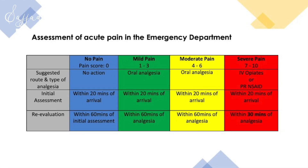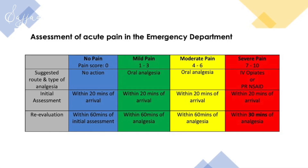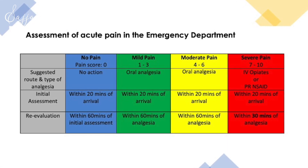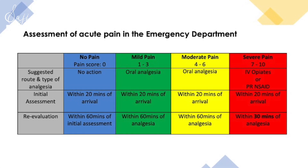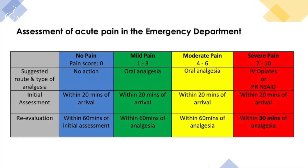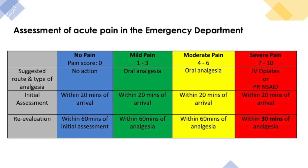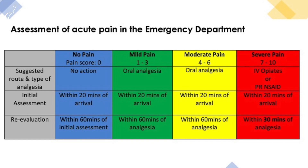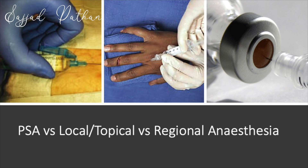The RCEM guidance on management of pain divides it into three types: mild, moderate, and severe pain. All patients need to be assessed and treated within 20 minutes. Those with mild pain should be reassessed in an hour, and those with severe pain within 30 minutes. Apart from oral, IV, or IM medications, there are different ways to achieve good pain control.